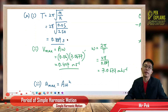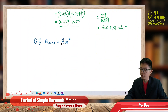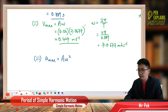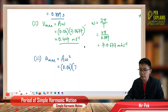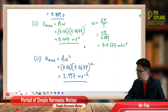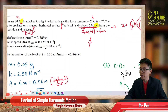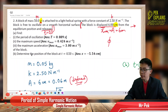Now, what is our maximum acceleration? The formula is a_max = Aω². Using our amplitude of 0.06 meter and ω = 7.0677, we get: a_max = 0.06 × (7.0677)² = 2.997 meters per second squared. That's our answer for maximum acceleration.